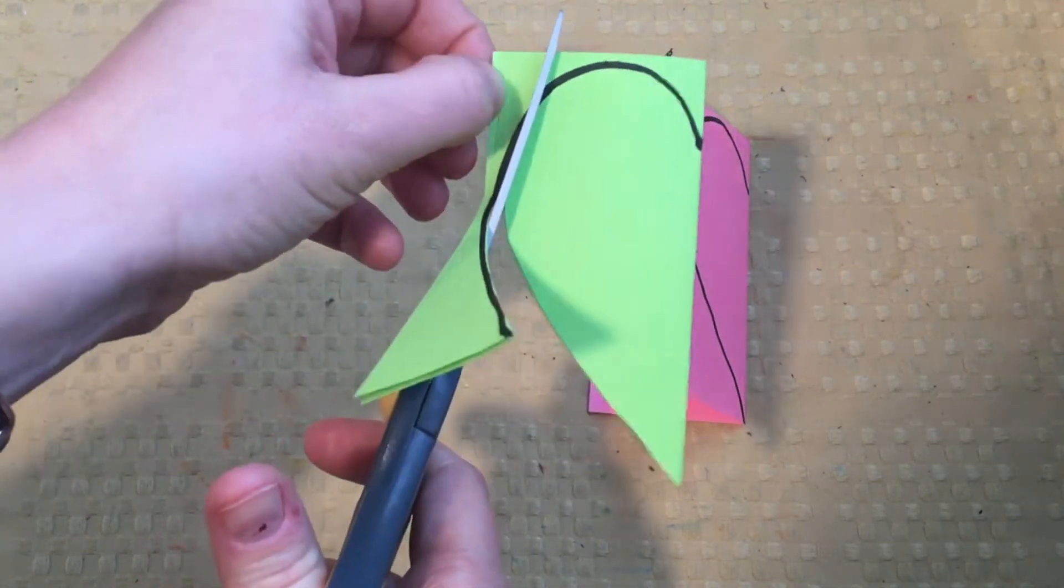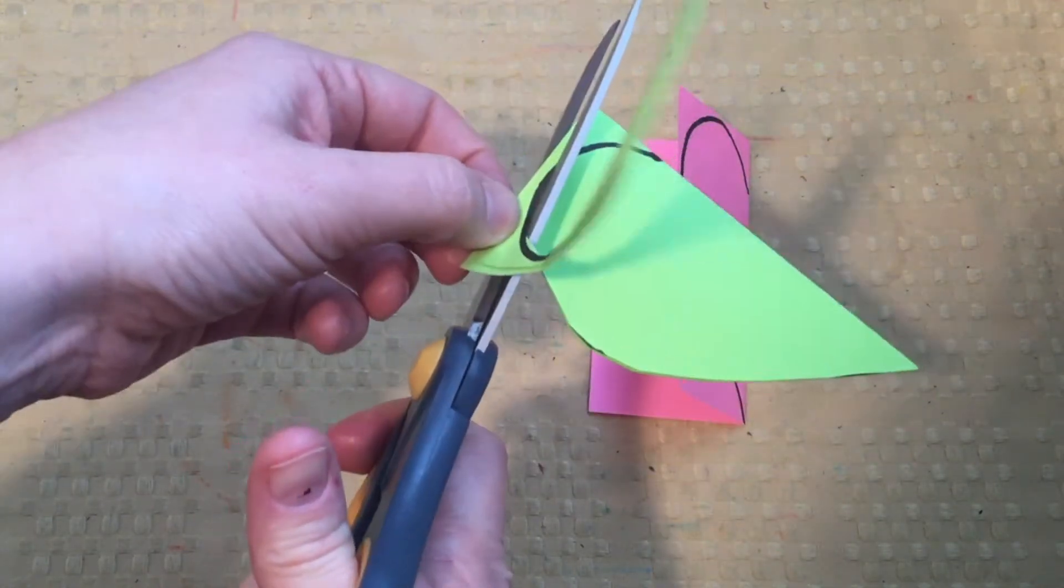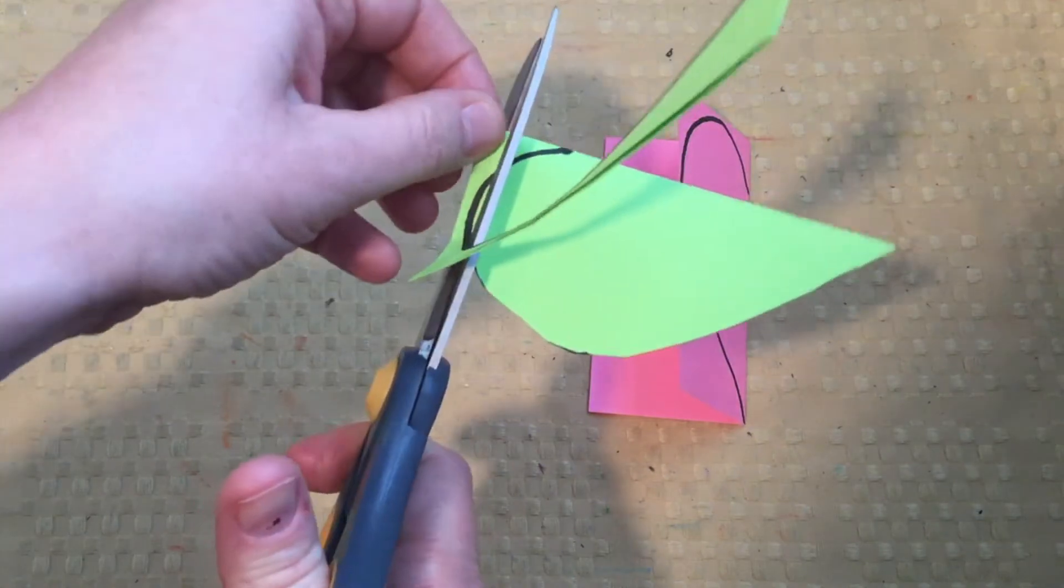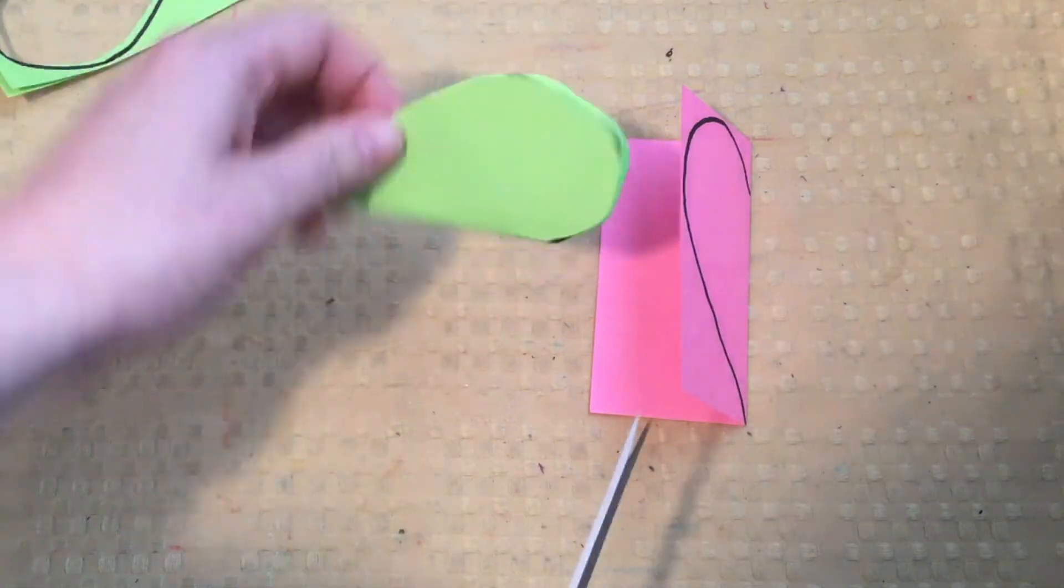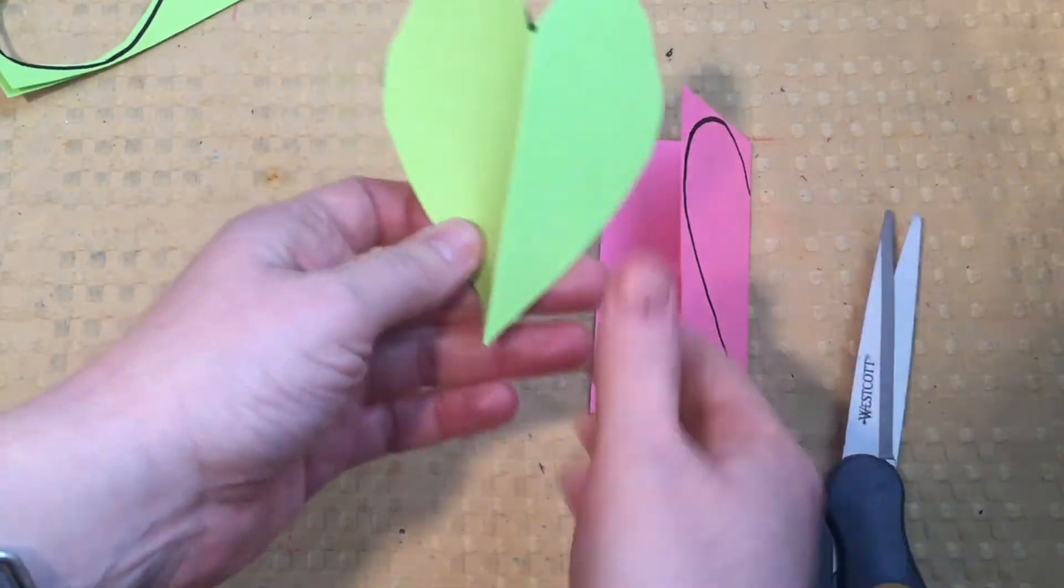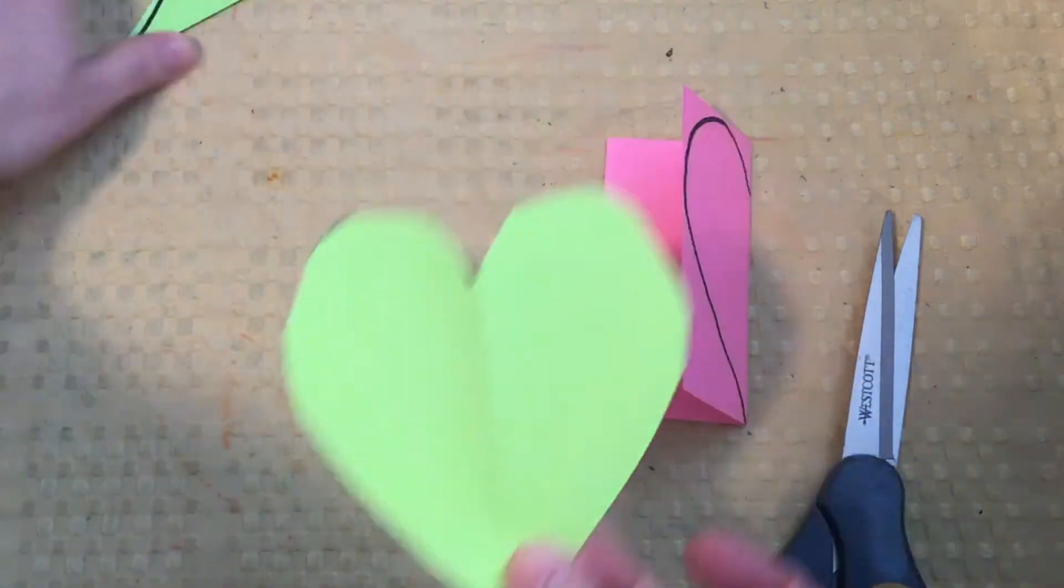Remember boys and girls, you want to hold the scissor with your thumb up and your elbow in. I recommend holding the heart part of your paper and maybe not the outside. That means it's a little bit more difficult for me. Once you've cut out your heart, you can open it up and you can see your shape.